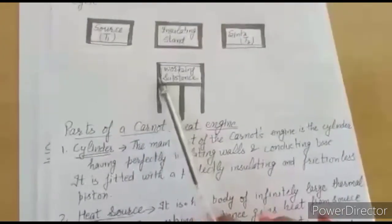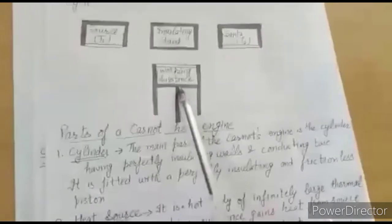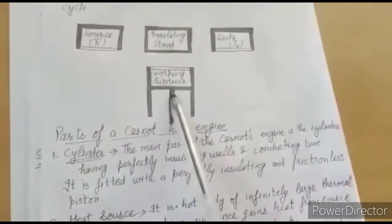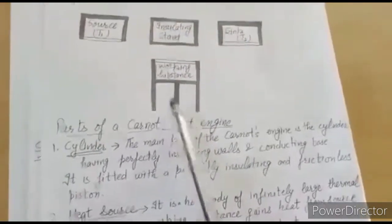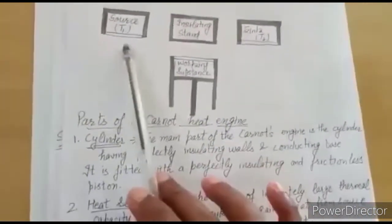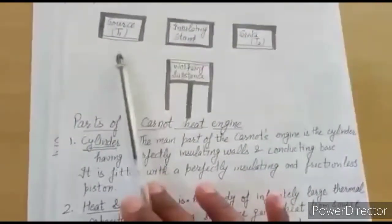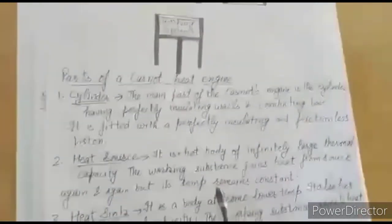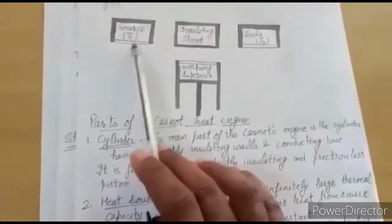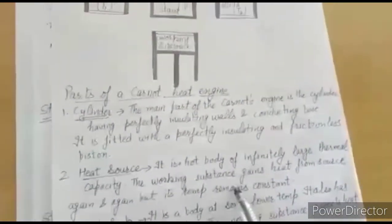The conducting base and insulating walls are shown in the diagram. There is a frictionless piston that can move up and down. The second component is the heat source — a hot body having infinite thermal capacity. The working substance gains heat from the source, but the temperature of the source remains constant at T1.